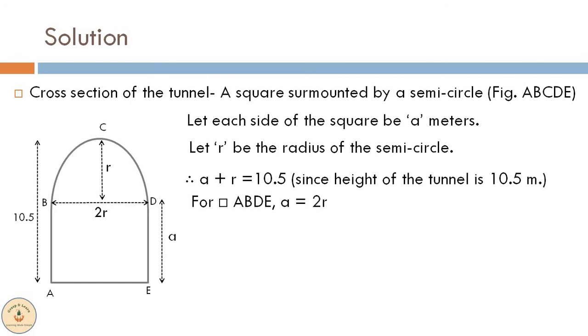Thus a equals 2r. Therefore r equals a by 2. When we substitute the value of r in the above equation, we obtain a plus a by 2 equals 10.5. Solving further, we get a equals 7 meters and r equals 7 by 2 meters.